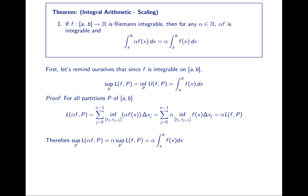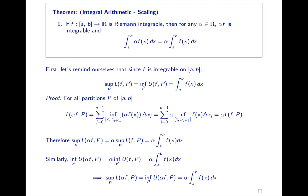Since for every lower sum of alpha·f we get alpha times the lower sum of f, it follows that the supremum over all partitions of the lower sums of alpha·f equals alpha times the supremum of all lower sums of f. Because f is integrable, the supremum of all lower sums of f is the integral of f. For the same reasoning, the infimum over all upper sums of alpha·f gives alpha times the integral. So the supremum of the lower sums of alpha·f equals the infimum of the upper sums of alpha·f, meaning alpha·f is integrable and both equal alpha times the integral. We've proven our result.